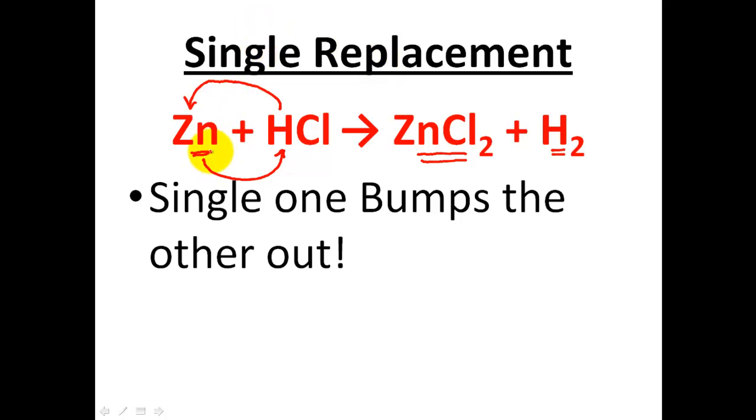Once again, I think a good way to think of this is that you have an element that is by itself. It is being added to a compound, something that is together. One of these will be replaced. The single one bumps the other out. It doesn't always happen. Sometimes it happens, sometimes it doesn't happen. That's a different lesson called single replacement reactions, though.